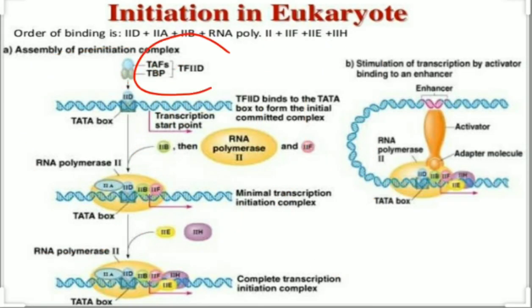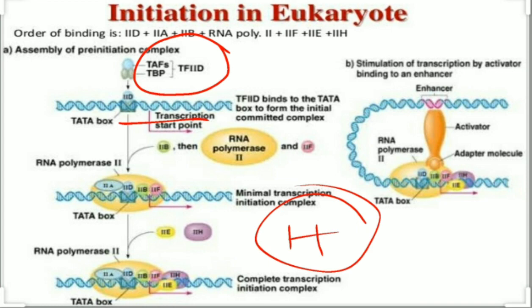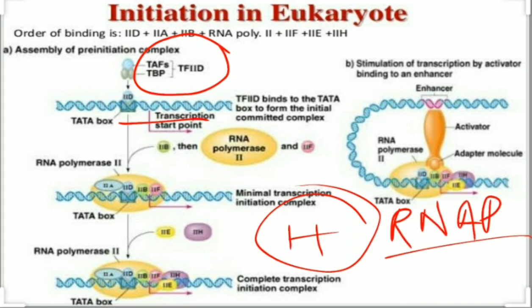Transcription factor 2D, as it binds to the DNA, bends the DNA molecule by about minus 100 degrees so that other factors can bind and work together easily. Transcription factor 2F comes along with RNA polymerase; then 2E and 2H are added. Transcription factor 2H is very important as it has helicase activity, and it also phosphorylates the carboxyl-terminal domain of RNA polymerase, thereby activating it.